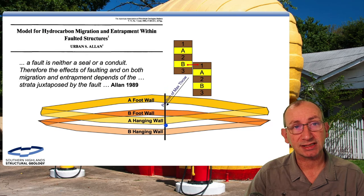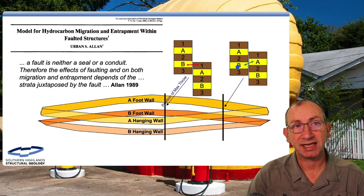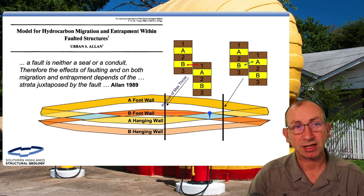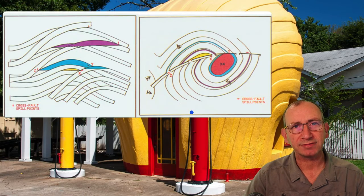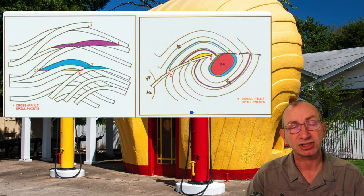If we do a cross section near the maximum displacement, my B reservoir in the footwall is juxtaposed against top seal — fine, we've got some potential for an accumulation using Allen's methodology. But if we do a cross section through another area, the B and A actually juxtapose. What we're looking for is these areas of juxtaposition and what's the highest point of juxtaposition, because that's what's going to control the fluid contact. Allen produced these beautiful diagrams by hand and they give you a good idea about the spill-fill chain of hydrocarbon accumulation.